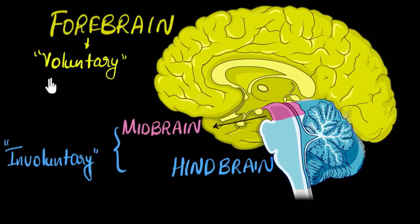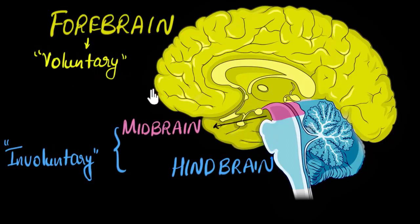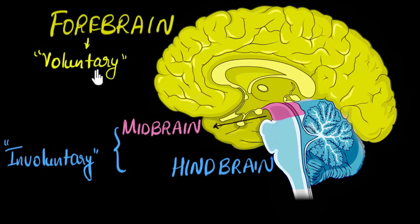When I say voluntary, think about all the actions you carry out consciously by thinking about them — like going for a walk, talking to someone, or deciding to watch this video about brains. All of that comes from your forebrain, and we'll go into more detail about that in a moment.